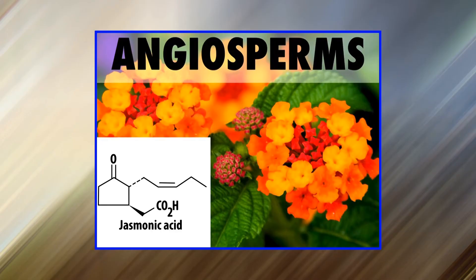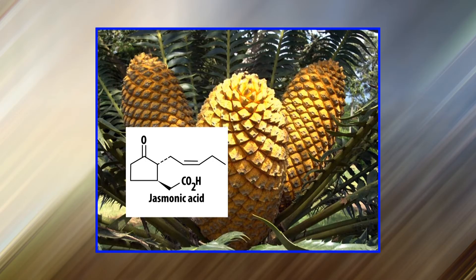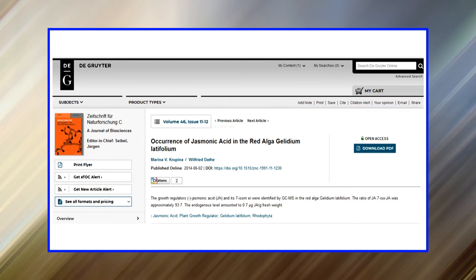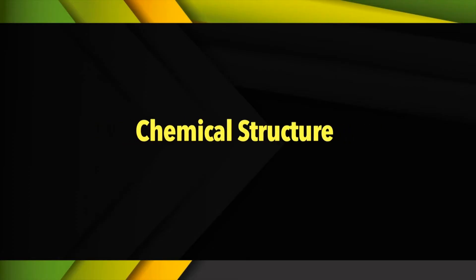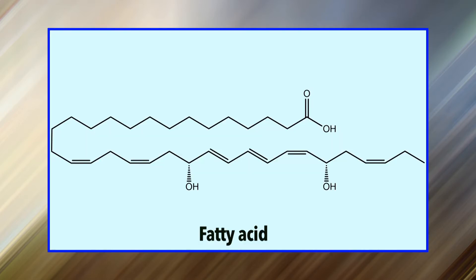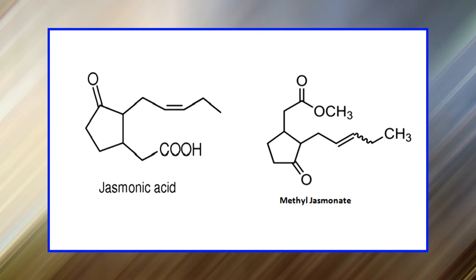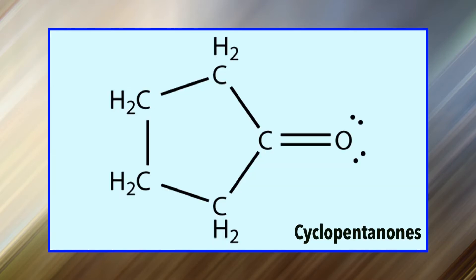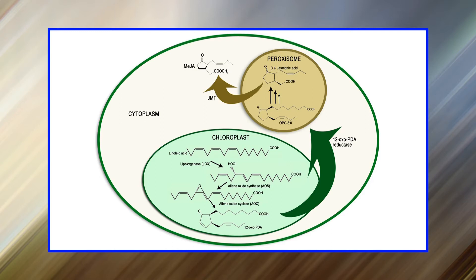It has been established that jasmonic acid and its derivatives occur throughout the plant kingdom. They have been recorded by radio immunoassay in more than 160 families of angiosperms and gymnosperms, with highest concentration in young growing tissue. They have also been found in green and red algae and in several fungi. Chemically, jasmonic acid and its derivatives are oxylipins, meaning these are derivatives of oxygenated fatty acids. Jasmonic acid and its methyl ester, methyl jasmonate, are fatty acid-derived cyclopentanones synthesized from linolenic acid by the octadecanoid pathway in the chloroplast membrane.